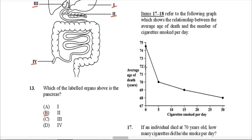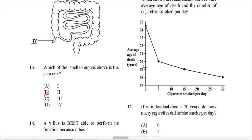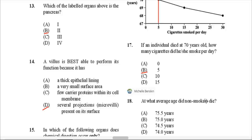Items 17 to 18 refer to a graph showing the relationship between the average age of death and the number of cigarettes smoked per day. Item 17: If an individual died at age 70, how many cigarettes did they smoke per day? You find age 70 on the y-axis, go across to the line on the graph, then come down to read off the cigarettes-per-day value. The answer is 5, so B is the correct answer.